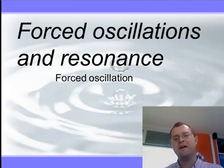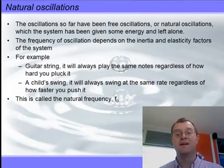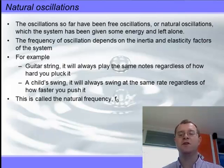Let's first of all start off with the fact that without forced oscillation we have something naturally occurring. That natural occurrence is the natural oscillation of any object. For instance, if we use the example of a guitar string, no matter how hard you pluck it, you always come out with the same note, because it has a natural frequency.